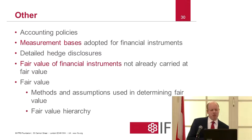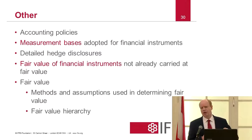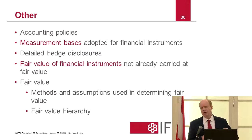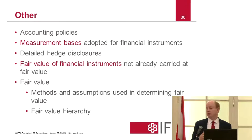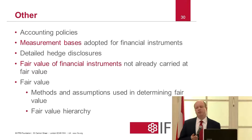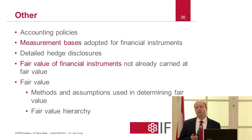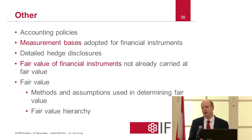The measurement basis adopted for financial instruments is always a very significant part of the disclosures. People want to know which instruments are at fair value, which are at amortised cost, which are held at fair value because an entity is trading them, or which have been designated at fair value. It would be nice in theory to have one measurement basis for all financial instruments, but we have a mixed measurement model. For instruments not carried at fair value, there are fair value disclosure requirements to complete the picture, though it can be quite difficult for institutions whose systems are not geared to fair value measurement.